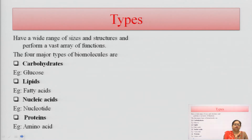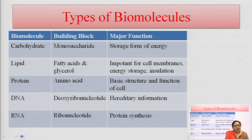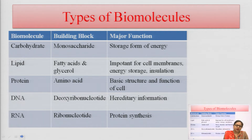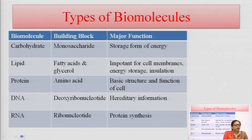We can conclude that the classification of biomolecules is based on four different types: carbohydrate, lipids, nucleic acid, and proteins. These biomolecules are complex in structure and use different types of monomers to form complex structures, as they are present in our living system and showing their various major functions.